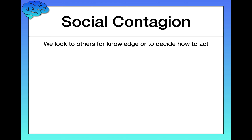Social contagion refers to the idea that we look to others for knowledge or to decide how to act. Social comparison theory posits that we seek to evaluate our abilities and beliefs by comparing them to others. According to the theory you can make downward social comparisons and upward social comparisons, and both can be beneficial.